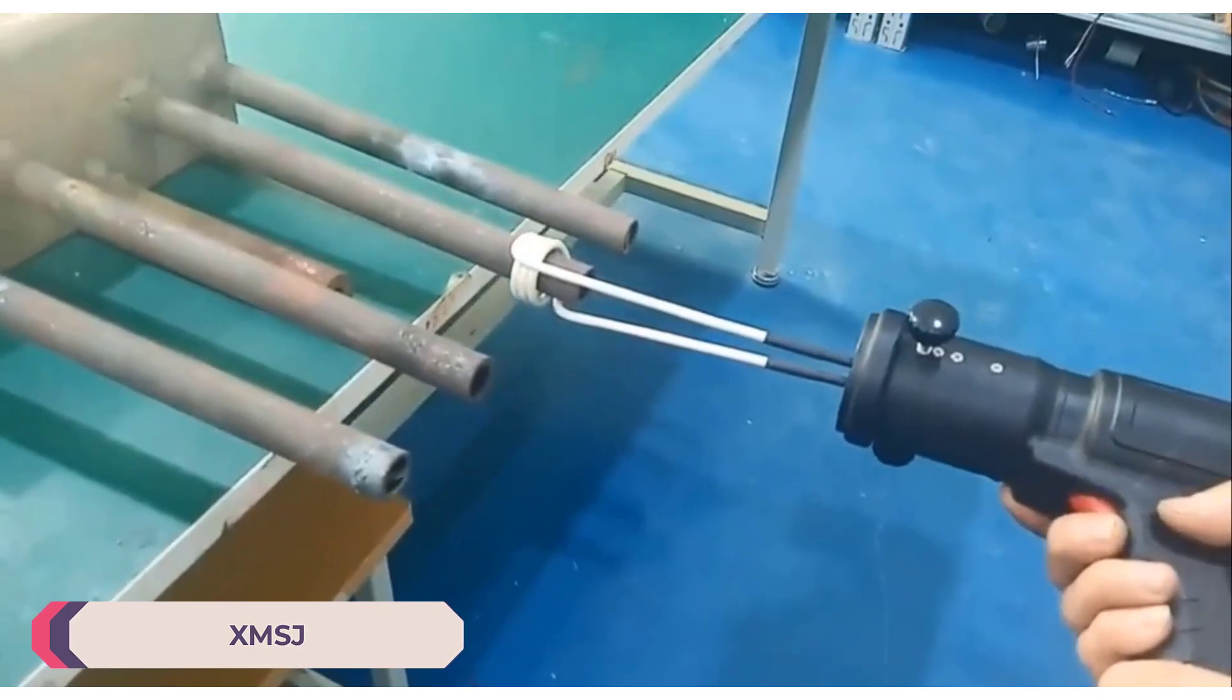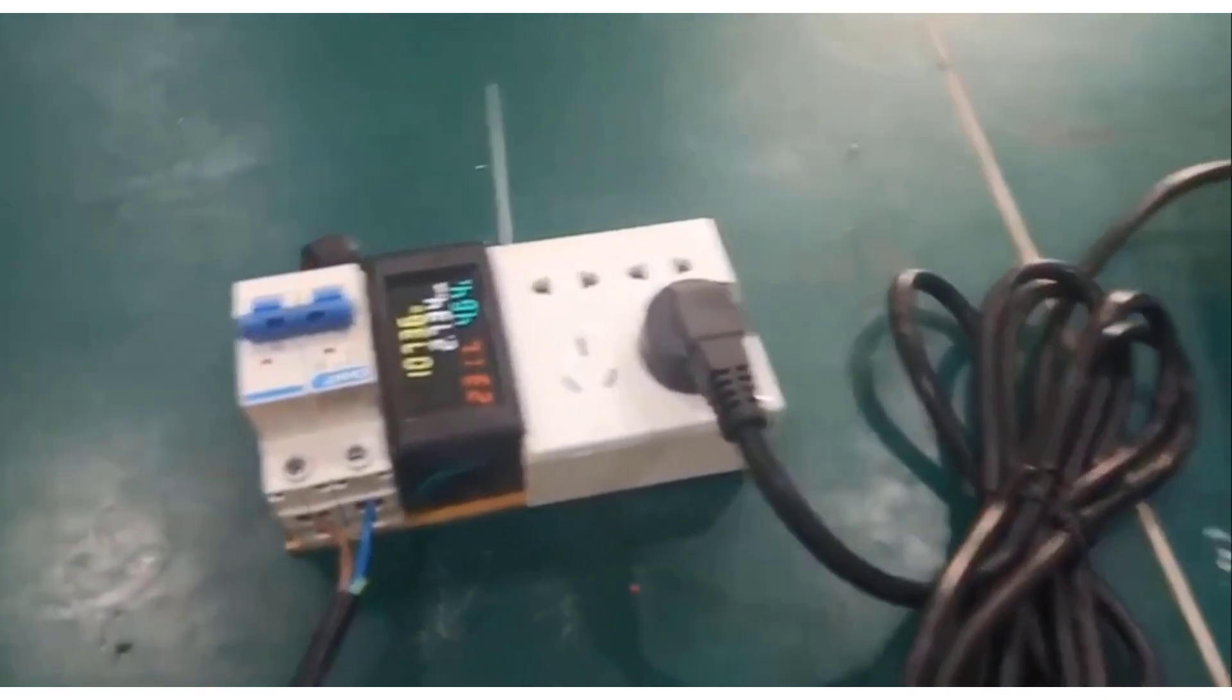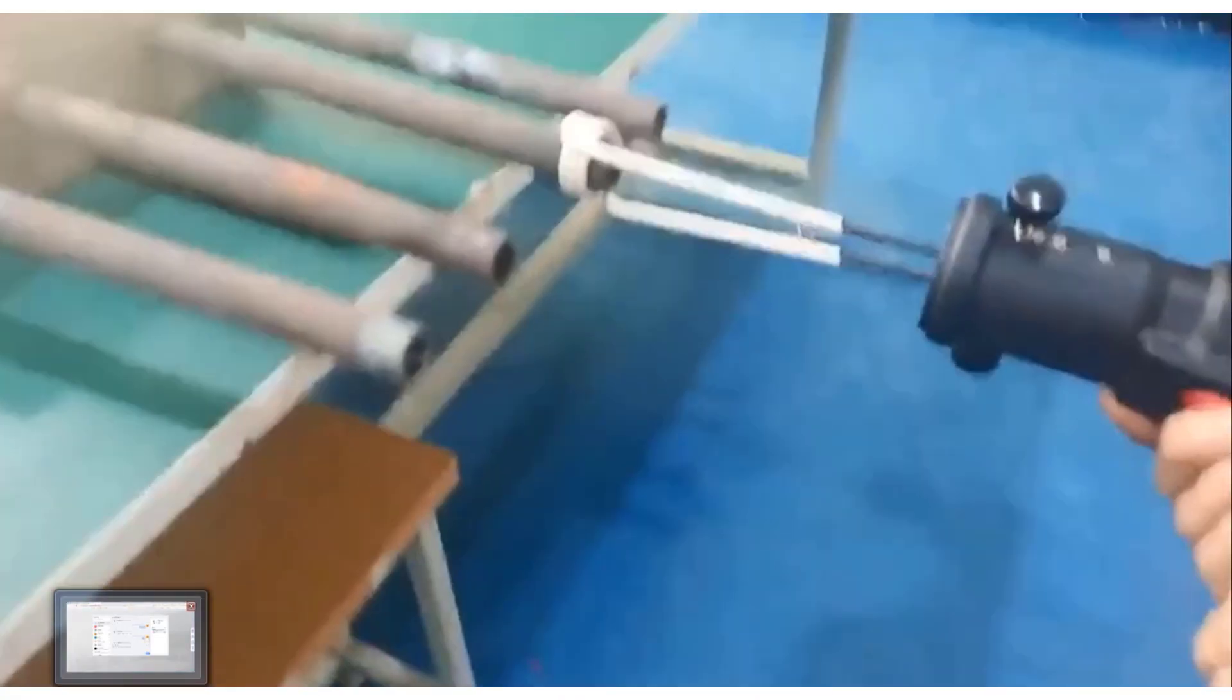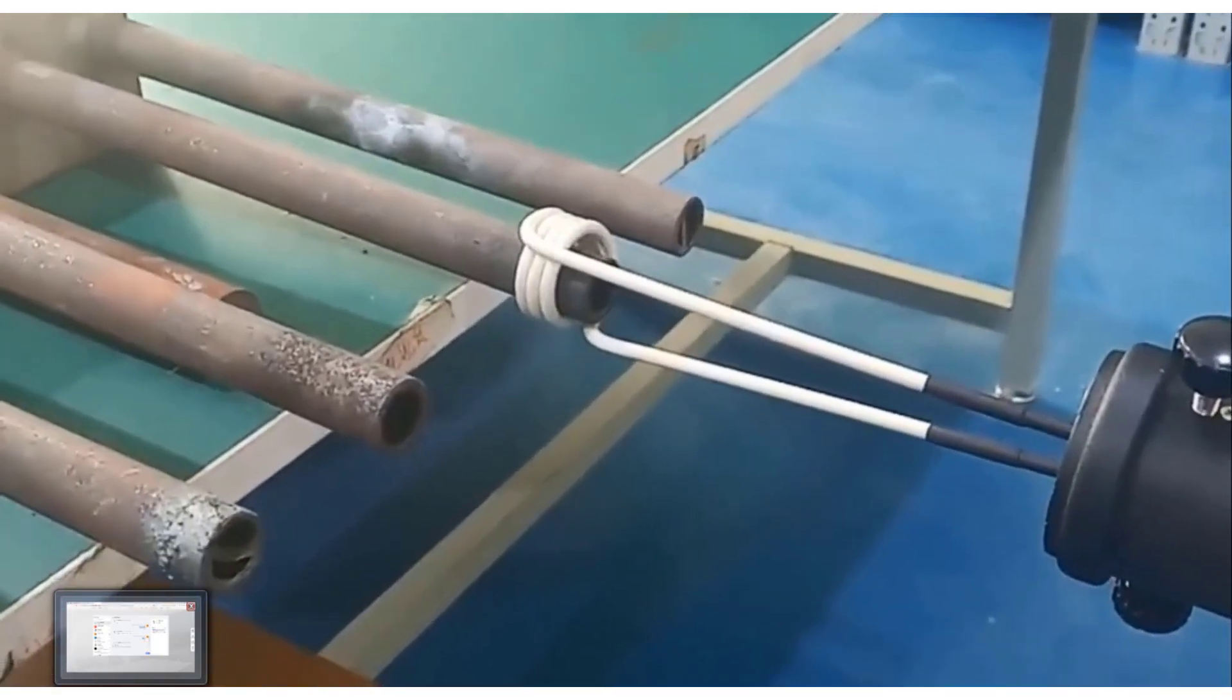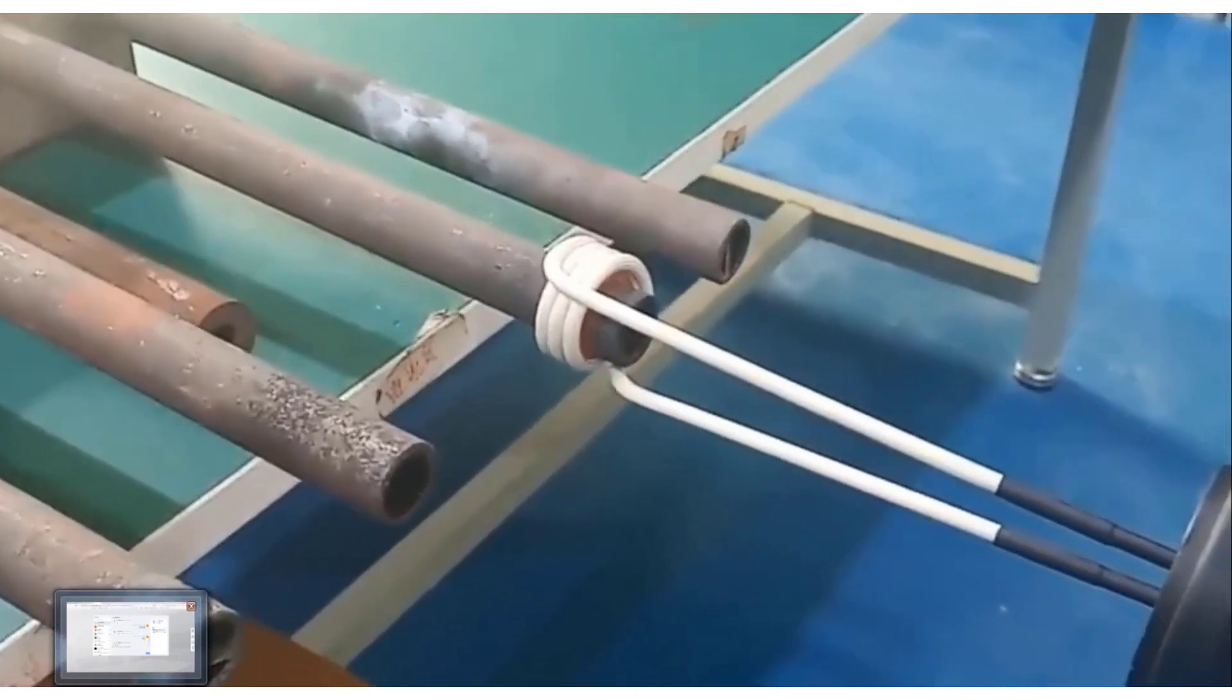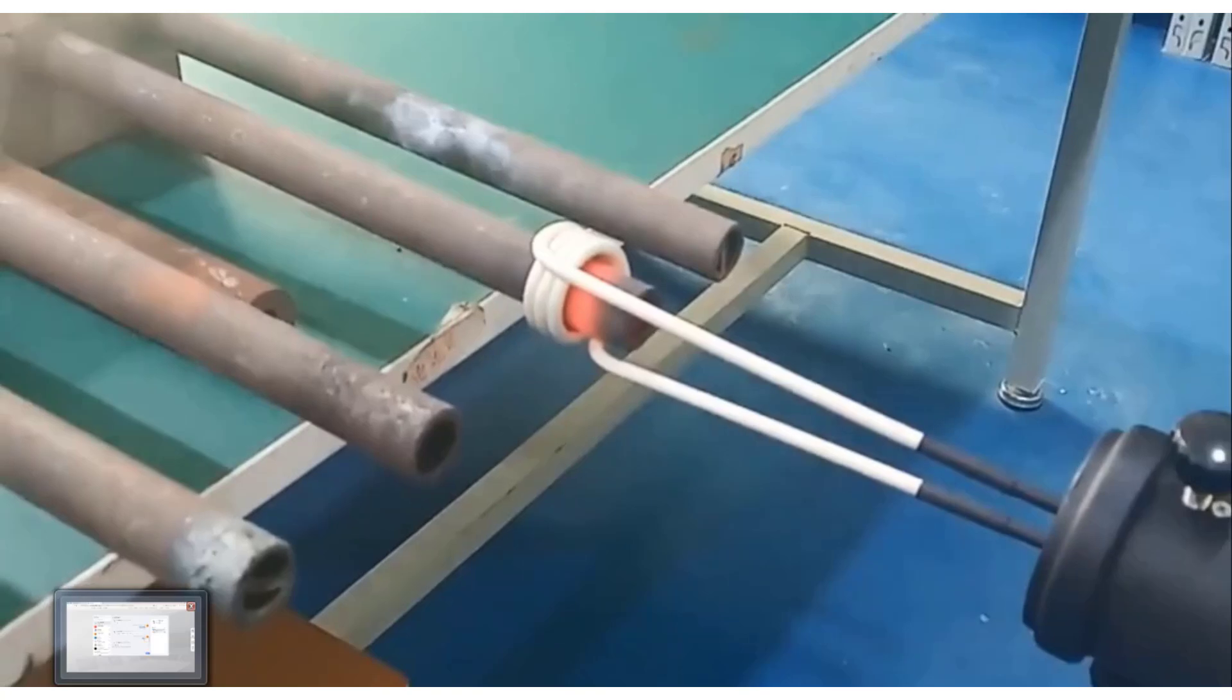Number 3: XMSJ Magnetic Induction Heater. The XMSJ 1500W Magnetic Induction Heater is a robust and efficient flameless heating tool designed for DIY enthusiasts and professionals. With a powerful 1500W output, it quickly and safely heats metal components like bolts and nuts without the risk of an open flame.